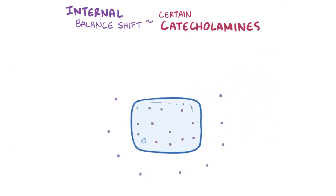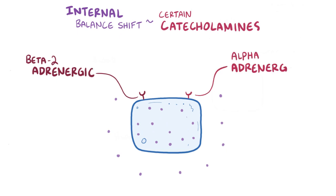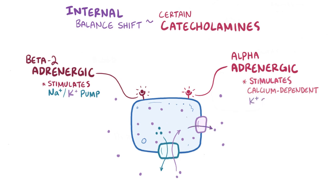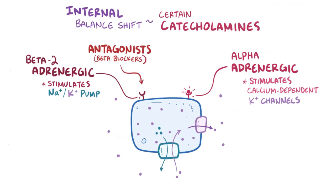Certain catecholamines can also shift potassium out of cells, via beta-2 adrenergic and alpha-adrenergic receptors on cell membranes. When activated, beta-2 adrenergic receptors stimulate the sodium-potassium pump, pulling potassium from the blood into cells. Meanwhile, alpha-adrenergic receptors cause a shift of potassium out of cells via calcium-dependent potassium channels. Therefore, beta-2 adrenergic antagonists, also known as beta-blockers, and alpha-adrenergic agonists both cause a shift of potassium out of cells and into the blood.